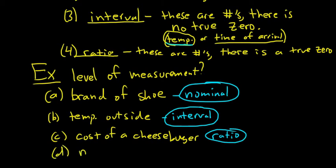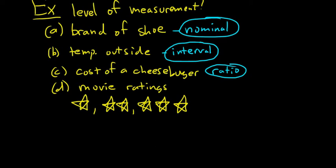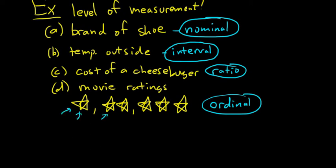Example D: movie ratings, where movies are rated one star, two stars, or three stars. A one star movie is not as good as a two star movie, which is not as good as a three star movie — so there's a natural ordering. The answer is ordinal. Notice you can't do math operations with these; if you take a one star movie and add another one star movie, you don't get a two star movie. Two bad movies don't make a better movie.